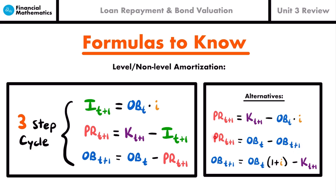If you want to find a principal amount but don't know any interest amounts, but you do know two outstanding balances, you subtract the later outstanding balance from the previous one to get the principal at the time of the later balance. There's also another way to calculate the outstanding balance at t+1: accumulate interest on the previous outstanding balance and subtract out the payment at that time. These basic formulas work for both level and non-level payments.